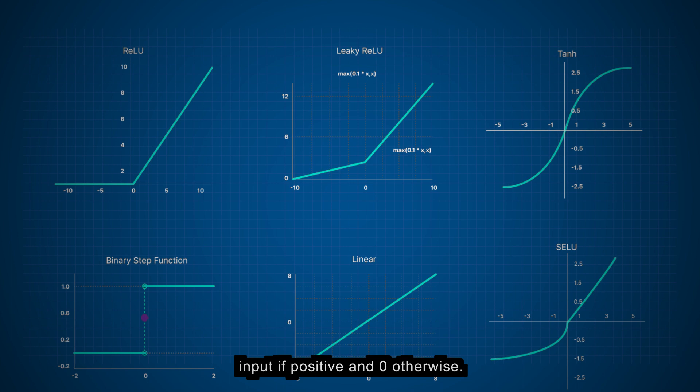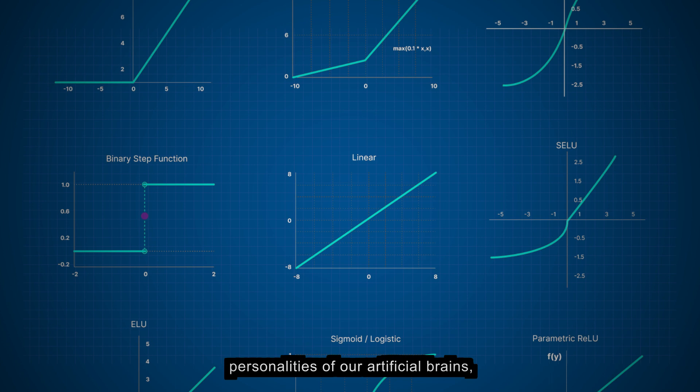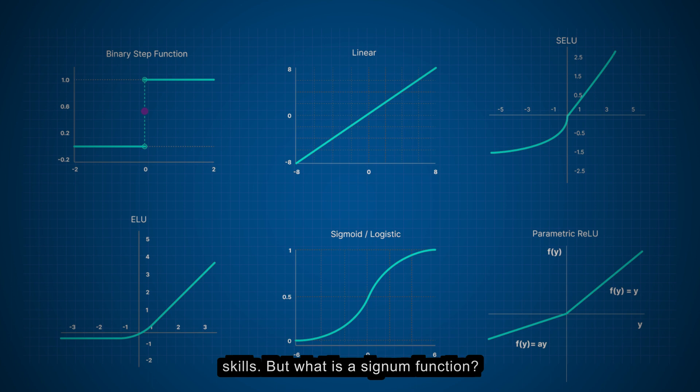In essence, activation functions make neural networks dynamic, adaptive, and capable of handling intricate data patterns. They're like the vibrant personalities of our artificial brains, allowing them to make decisions, learn, and impress us with their problem-solving skills. But what is a signum function?